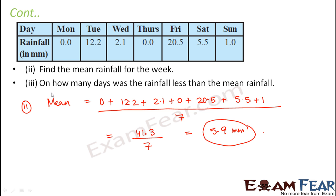Third question: On how many days was the rainfall less than the mean rainfall? So you have to find out those days when the rainfall was less than the mean rainfall. So basically you need to find out all those days where the rainfall was less than 5.9. So Monday is less than 5.9, Tuesday is not, Wednesday is again less than 5.9, Thursday is again less than 5.9, Friday is not.